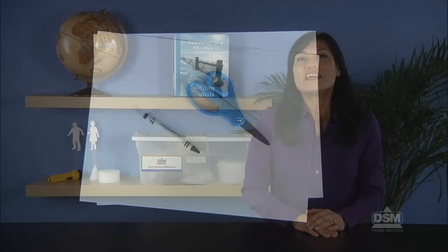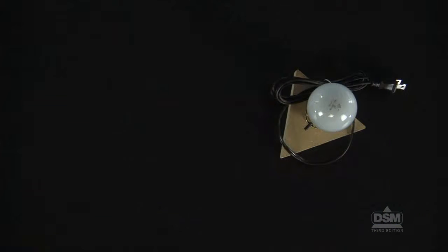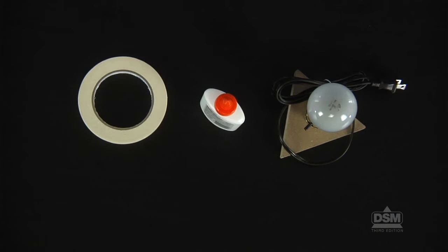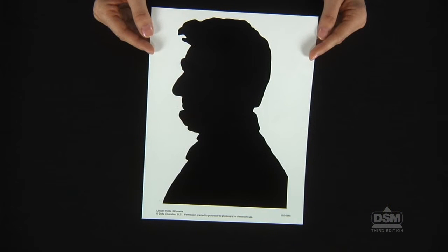Each student will need two sheets of white construction paper, a black crayon, and a pair of scissors. Each team of four will need a light source with a light bulb and access to glue and masking tape. You will also need the Lincoln profile silhouette, which is included as a copy master with Activity Sheet 2.